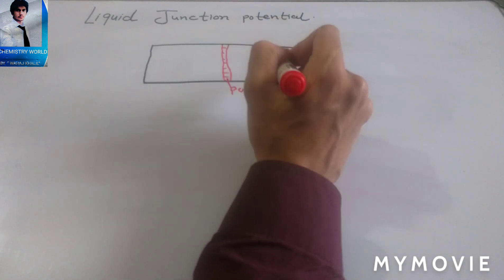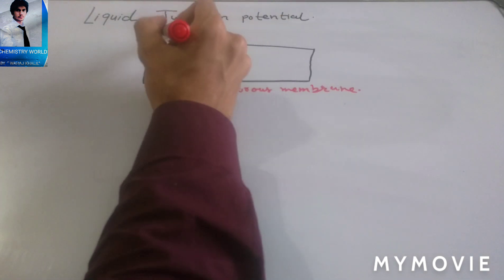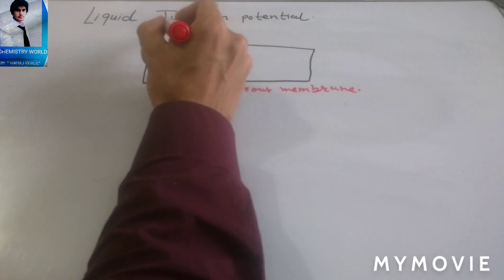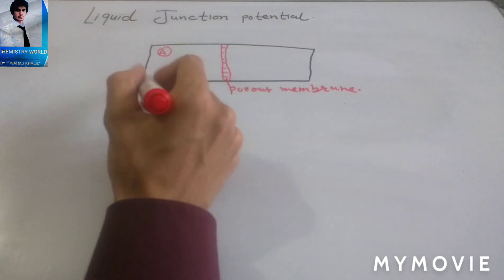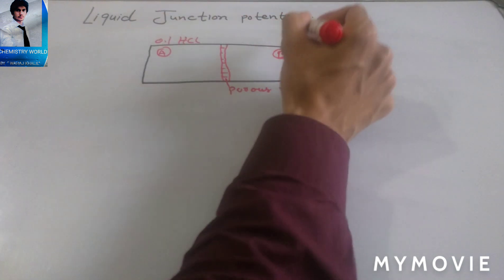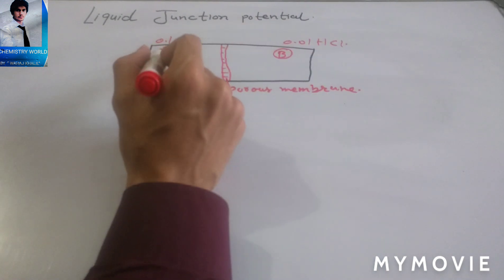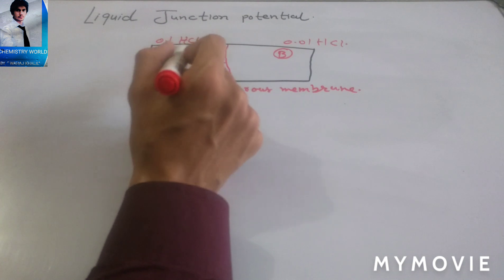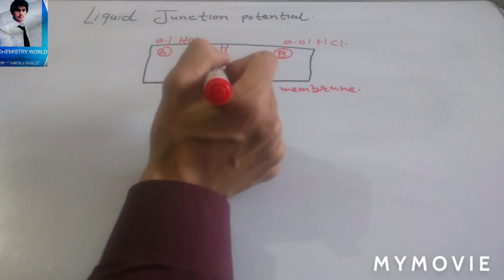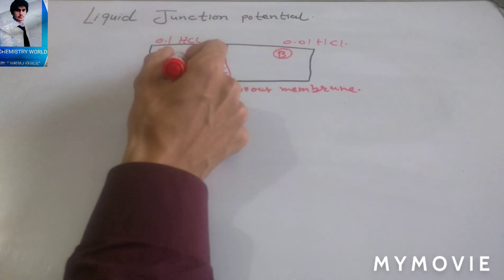The chambers are filled with electrolytes of the same but different concentrations. For example, we have HCl in both chambers, but the concentration of HCl in chamber A is 0.1 M and in chamber B is 0.01 M. This means the concentration of HCl in chamber A is higher compared to chamber B.